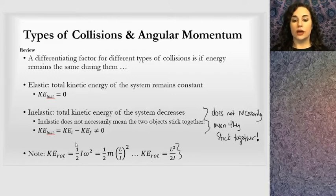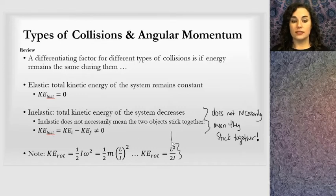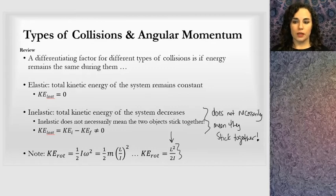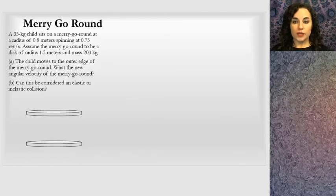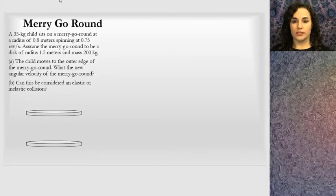So if you're calculating any initial or final kinetic energy, you can use a simpler equation rather than one-half I omega squared. I've picked one problem for us to do as an exemplification of this concept.